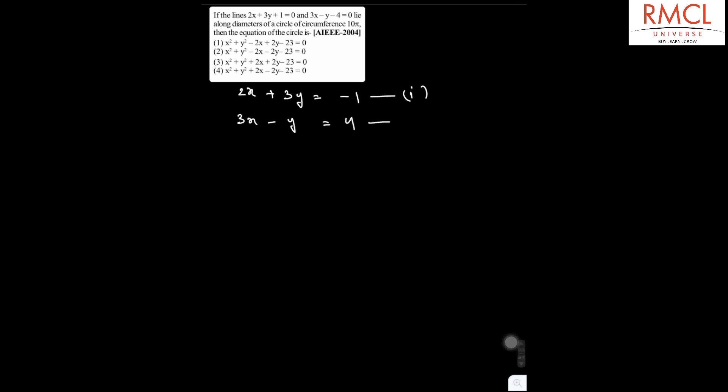These two equations, equation 1 and equation 2, are the equations of the diameters of the circle. Therefore the intersection point of these two lines will be the center of the circle. The intersection point is (1, -1), so (1, -1) is the center of the circle.